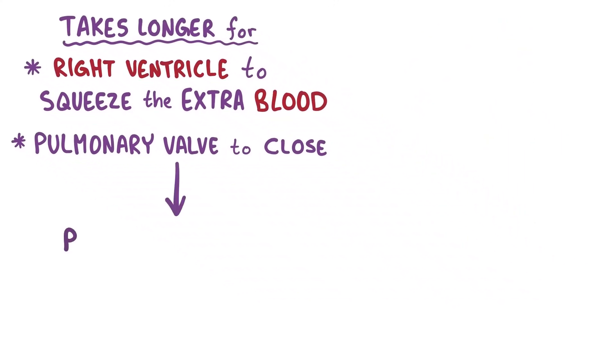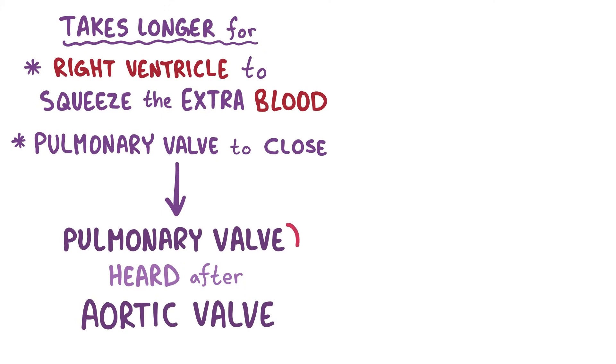So during inspiration, the closing of the pulmonary valve is heard slightly later than the aortic valve, and that's called the physiologic splitting of the S2. Now after both the aortic and pulmonary valves have shut down, the atrial ventricular valves open up again, letting the cycle start all over.